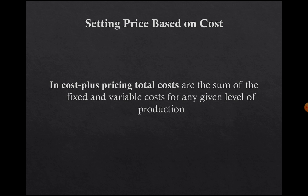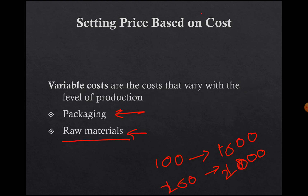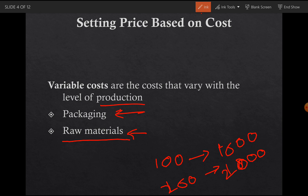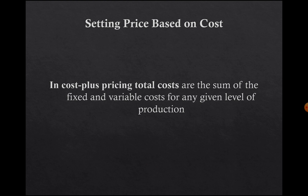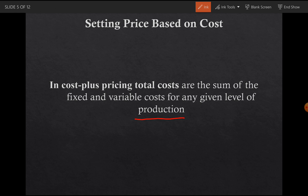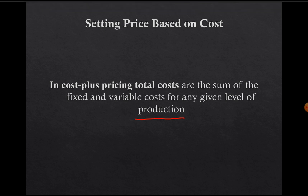What we are discussing from the beginning is actually the production — the amount or level of production you are having. These costs are actually calculated based upon a one-time project. How many units are we producing in one particular time? We calculate the fixed cost and the variable cost for that particular period.